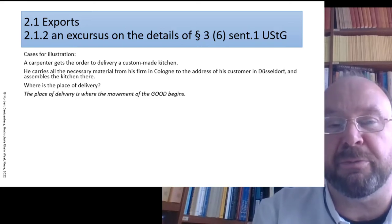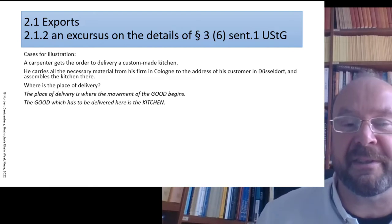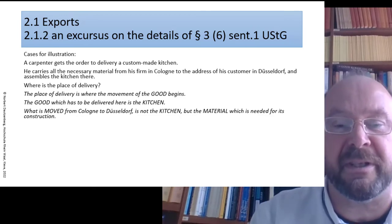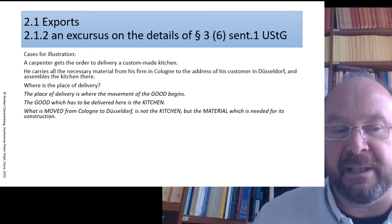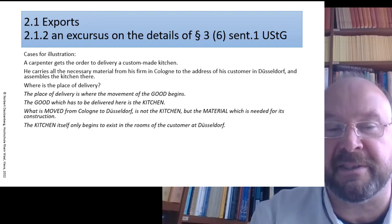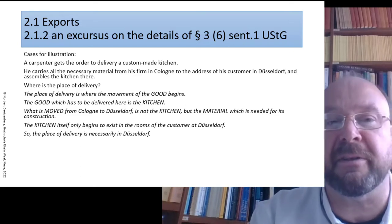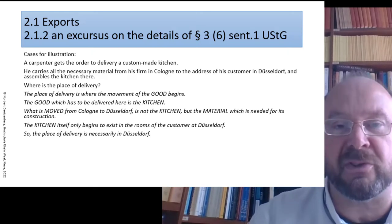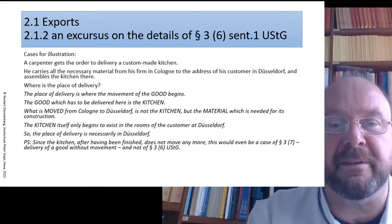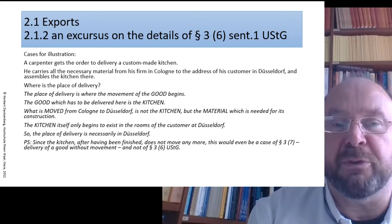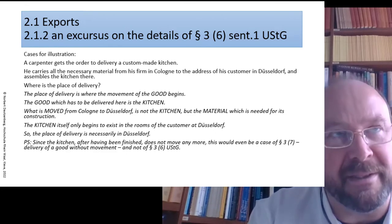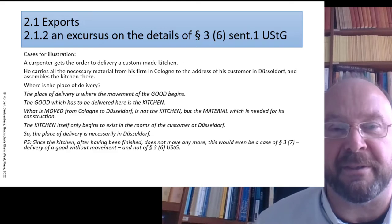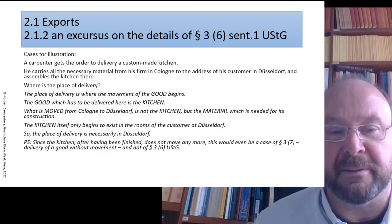The good in question is the kitchen. What is moved from Cologne to Düsseldorf is not that kitchen, but only the material from which the kitchen will be made. The kitchen itself only begins to exist in the room of the customer at Düsseldorf. So the earliest place where the movement of that kitchen towards the customer is in the rooms of the customer in Düsseldorf — and there the kitchen stays. This is not a delivery with movement of the good, but a delivery without any movement.